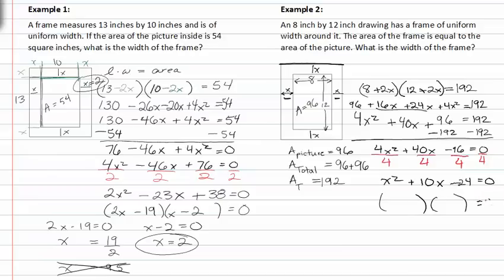Factoring, we get x plus twelve and x minus two. Set the factors equal to zero and x equals negative twelve and x equals two. We can't have a negative value, so two is our width of the frame.